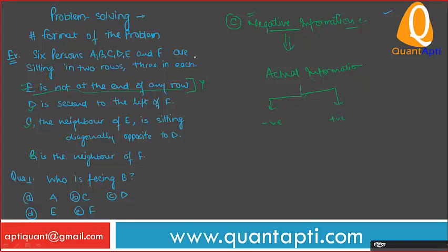So if you follow these steps in any problem solving question — first take a couple of seconds to look at it and identify the general theme, then find the useful secondary information, then find the actual information, and then the negative information — and when you analyze these using the methods, there are six to seven methods we will study. The types of problems include: categorization problems, arrangement problems like sitting arrangement, comparison problems like height or area comparison, and blood relation problems.